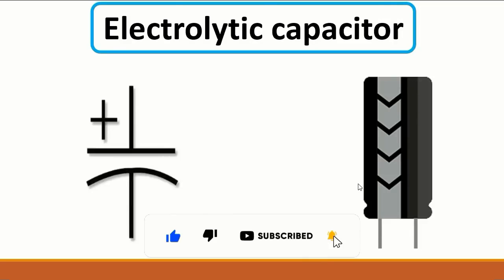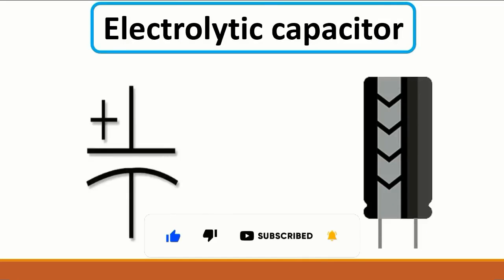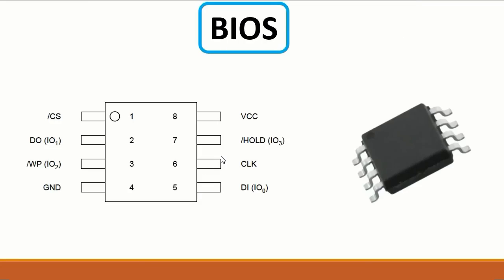This is the electrolytic capacitor — specifically the THT electrolytic capacitor, not the SMD version. It always has a plus and a minus, making it a polarized capacitor. Its purpose is to filter the current. The SMD version serves the same purpose but in a surface-mount form factor.